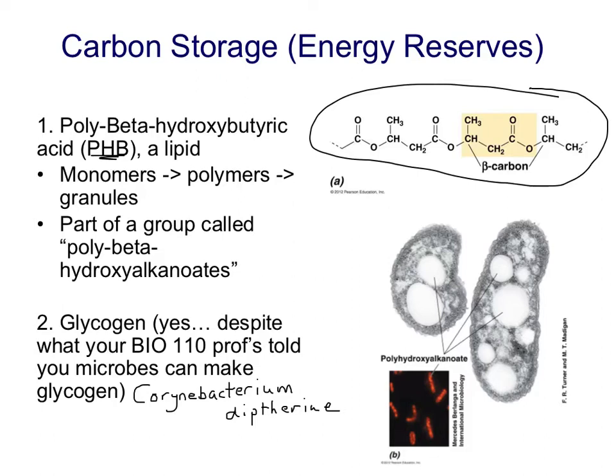So PHB and glycogen are two types of carbon-based energy storage molecules that are stored in inclusion bodies by many bacterial and some archaeal cells.